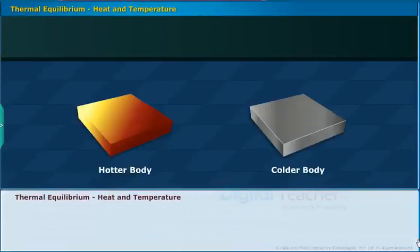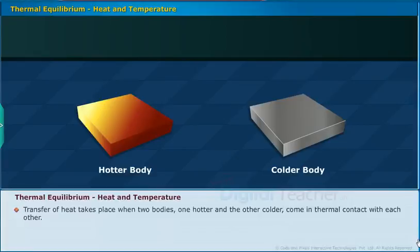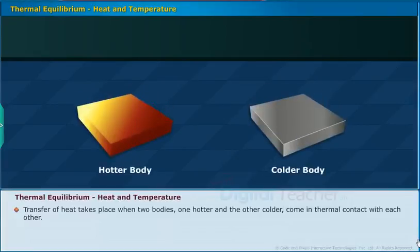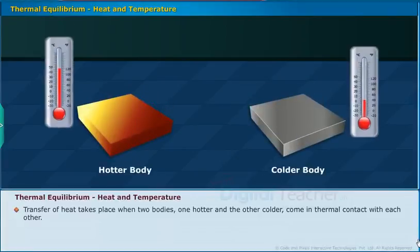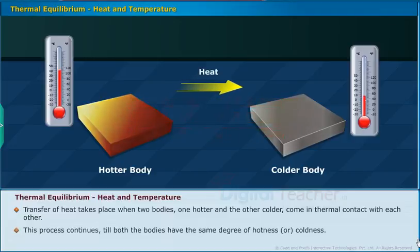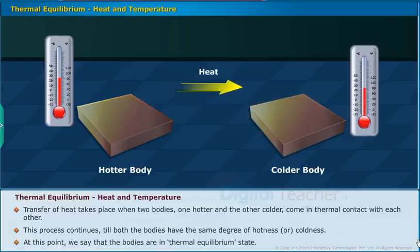Thermal equilibrium: transfer of heat takes place when two bodies — one hotter and one colder — come in thermal contact with each other. This process continues until both bodies have the same degree of hotness or coldness. At this point, we say that the bodies are in thermal equilibrium state.